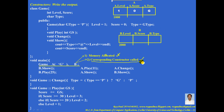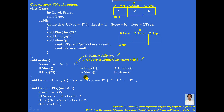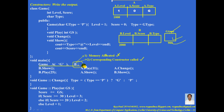The corresponding constructor should be called. A member function with the same name as the class is known as a constructor, so control comes to the constructor. Here an argument is not given, so the default value 'P' comes into parameter gType. Memory is allocated for gType and it contains the default value 'P'.